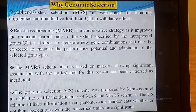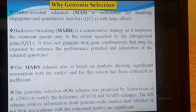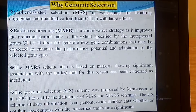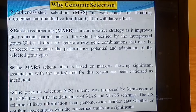So, why genomic selection? If we already have marker-assisted backcrossing and marker-assisted recurrent selection, why do we need genomic selection? The first reason is that traditional marker-assisted selection is well suited only for handling oligogenes, major genes, or QTLs with large effects. Marker-assisted selection is mainly suitable for QTLs that have a large effect.